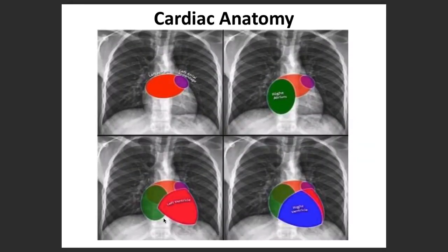Let's try to have a look at some colorful pictures. X-rays are normally black and white, but what can we see? For example, this is the left atrium, this is the left atrial appendage, then comes the right atrium, the left ventricle, and finally the right ventricle.